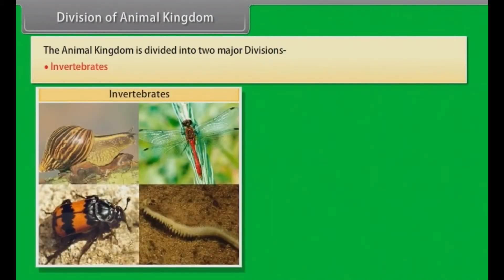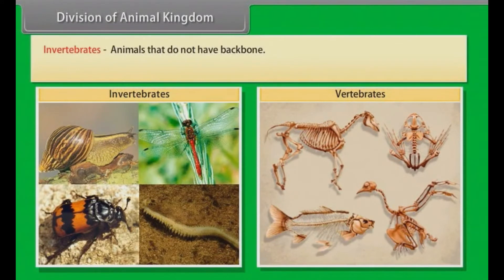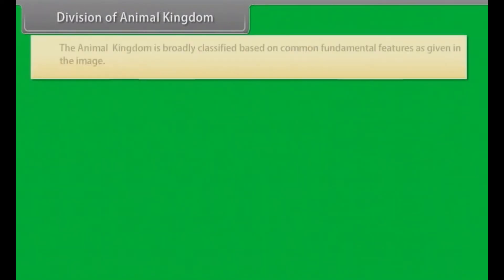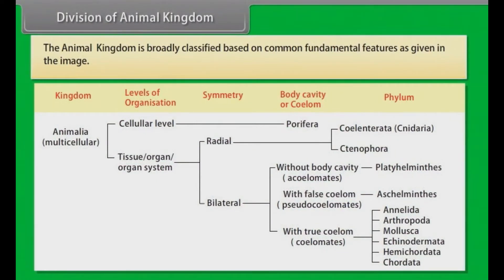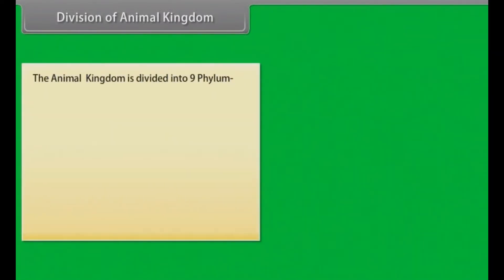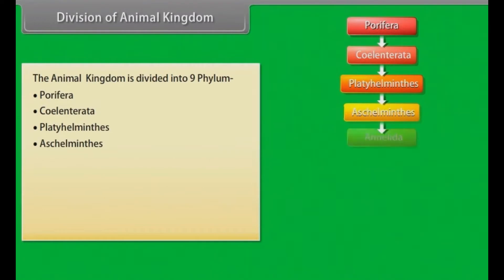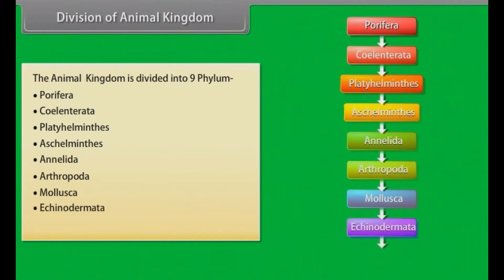Division of Animal Kingdom. The animal kingdom is divided in two major divisions: invertebrates and vertebrates. Invertebrates are animals that do not have backbone. Vertebrates are animals which have backbone. The animal kingdom is broadly classified based on common fundamental features as given in the image. The animal kingdom is divided into nine phylum: Porifera, Coelenterata, Platyhelminthes, Aschelminthes, Annelida, Arthropoda, Mollusca, Echinodermata, Chordata.